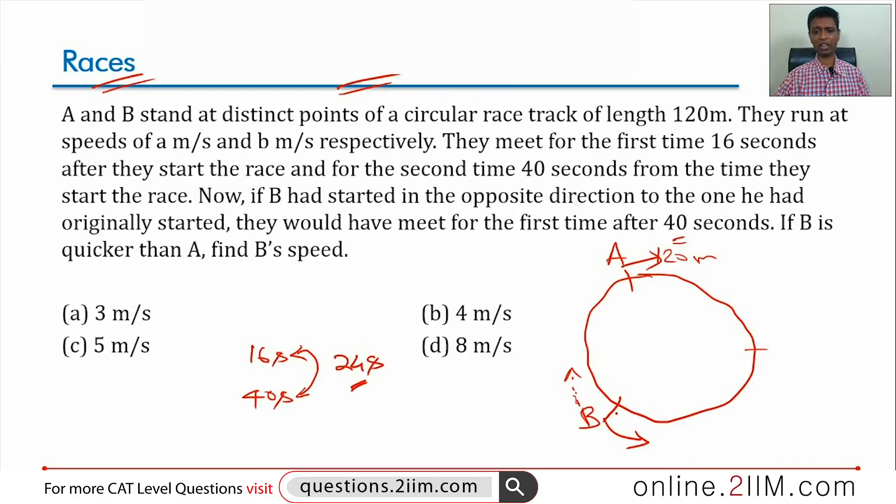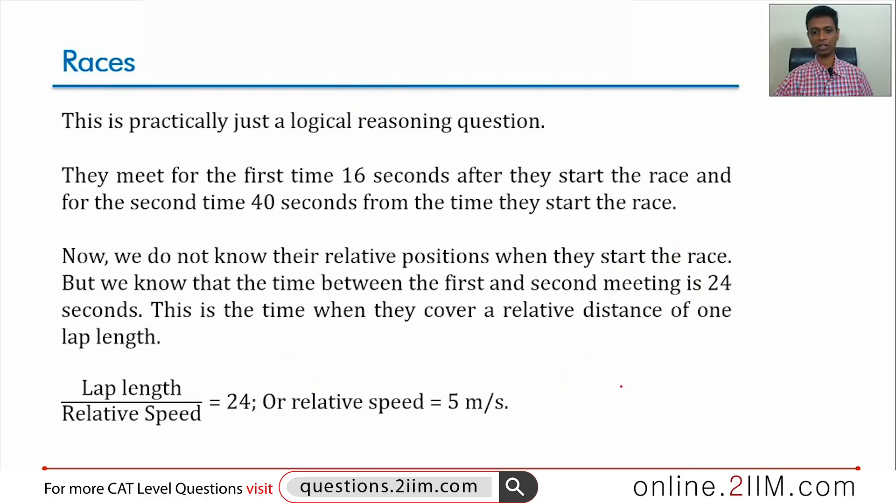Very vital idea. I'm going to recapture this digitally. They move in the same direction, they meet after 16, they meet after 40. In the other direction, the first meeting would have taken 40 seconds. So they were running towards each other. When they are running towards each other, they complete one lap in 24 seconds.